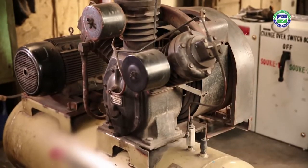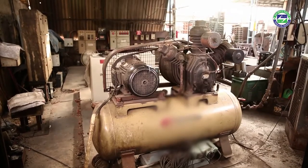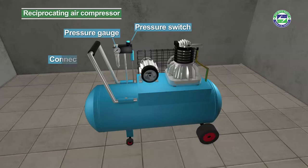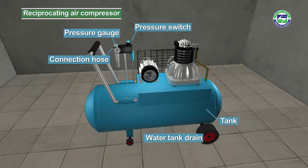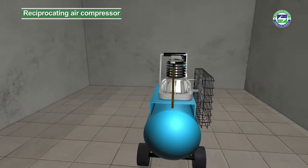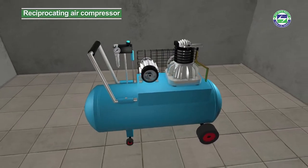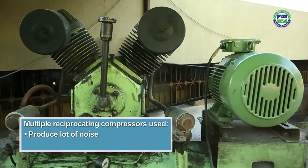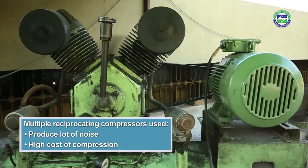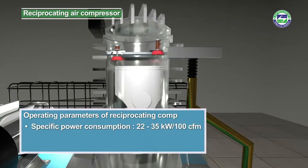An air compressor is a power tool that creates and moves pressurized air. Air under pressure provides great force, which can be used to power many different kinds of tools. Conventionally, reciprocating air compressors working by means of a piston and cylinder are the most commonly used compressors for industrial applications. Traditionally, industries produce compressed air using multiple reciprocating air compressors.